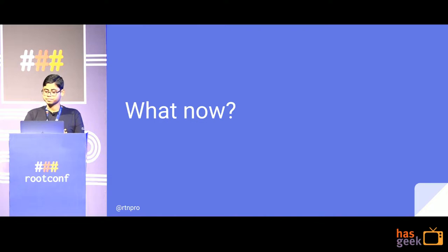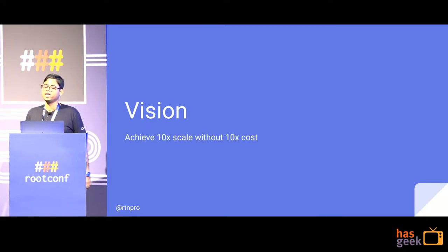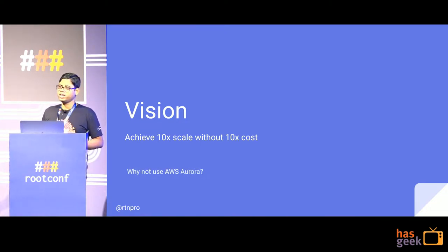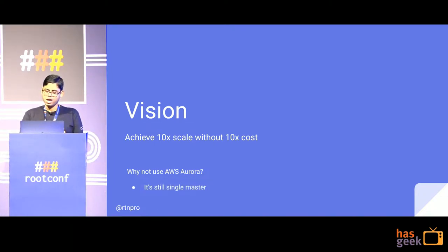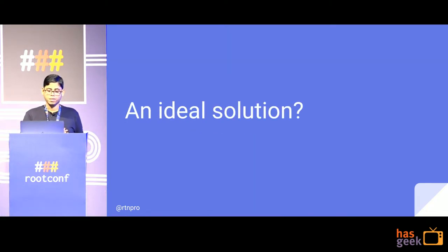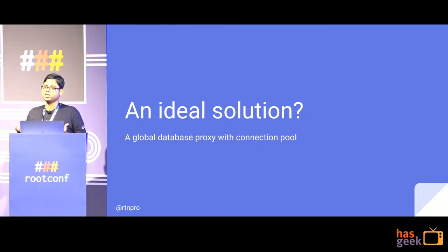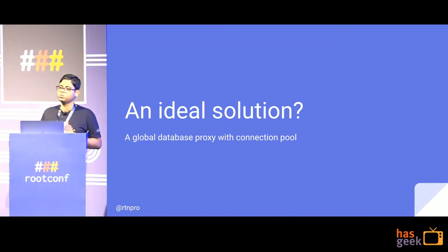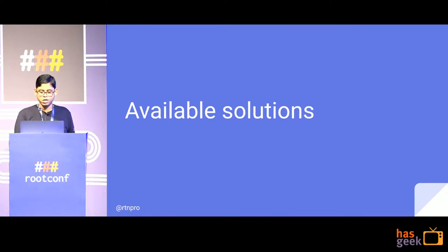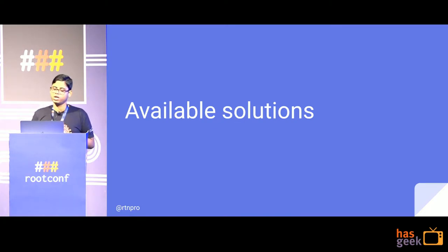We started with a vision that we want to hit 10x scale without 10x cost. We considered AWS Aurora, but it is still limited by a single master and involves some re-architecture, which we did not want to do at that time. So we started looking for a global database proxy with a good and efficient connection pool — something that works across multiple servers, not just a single process.